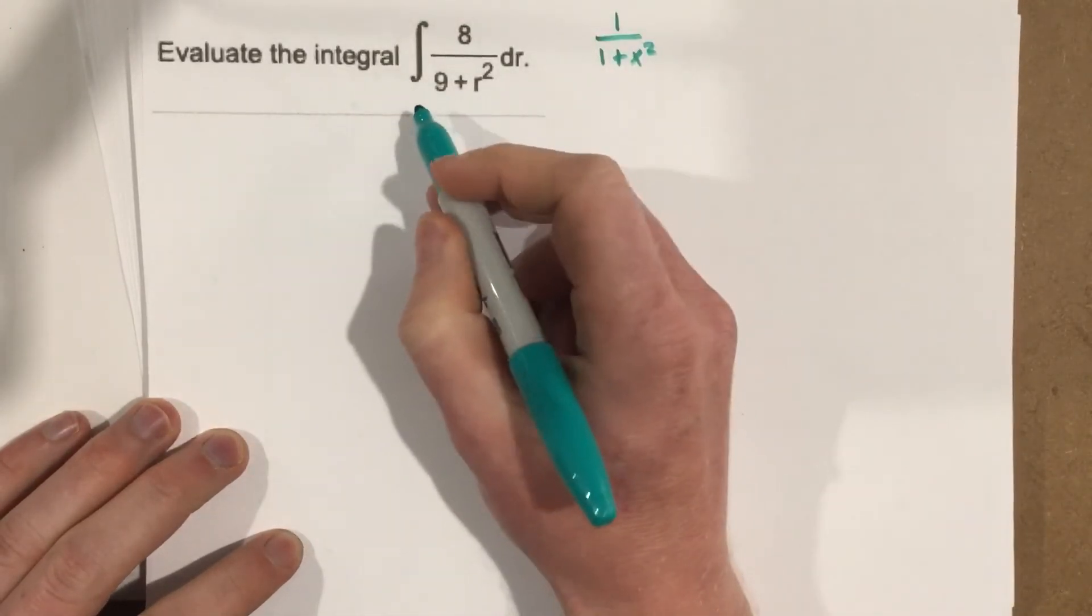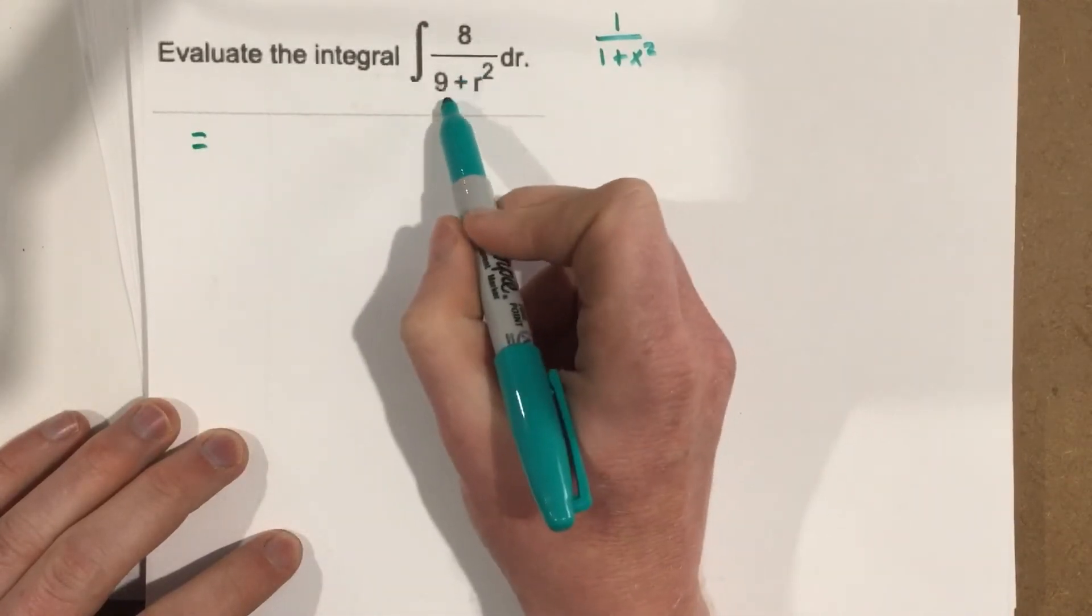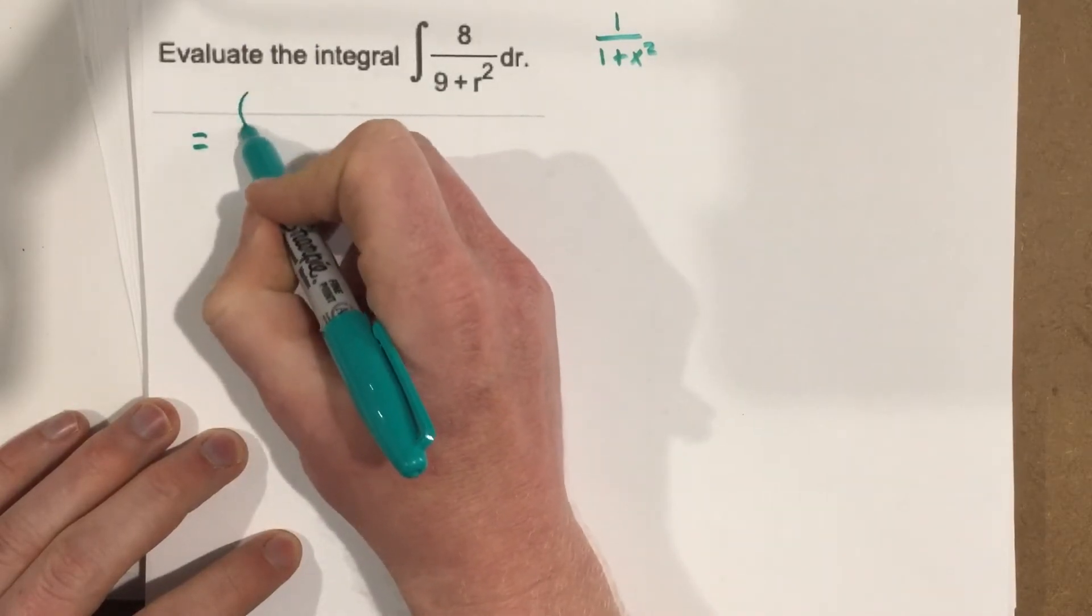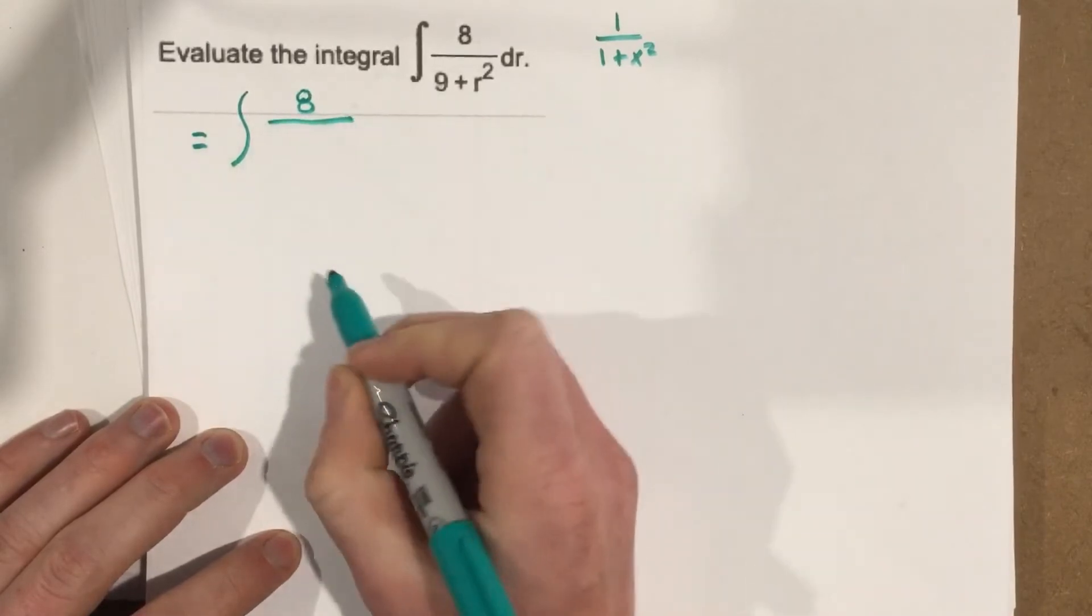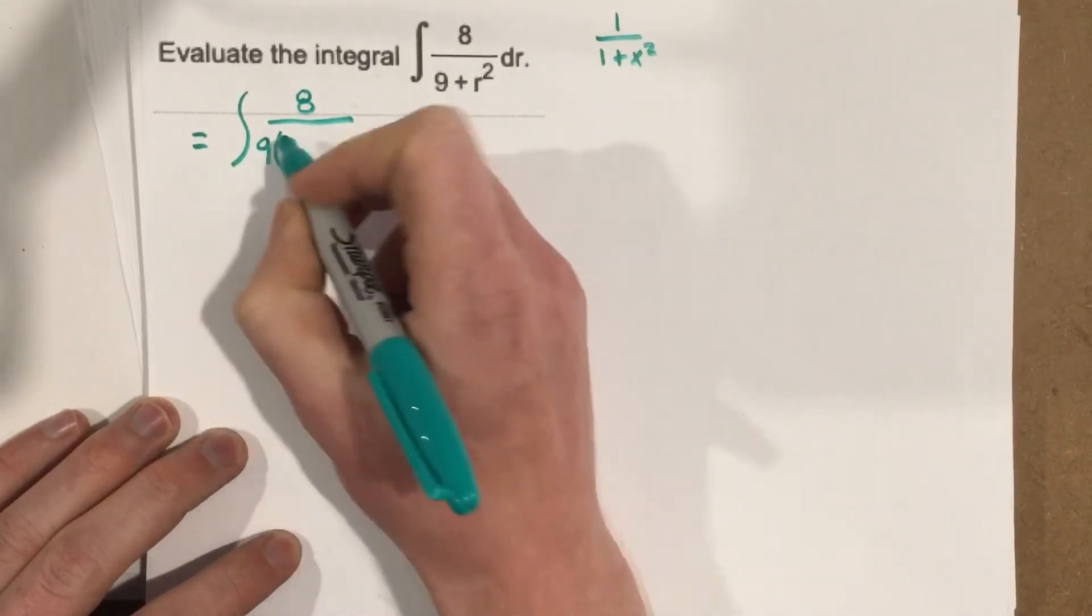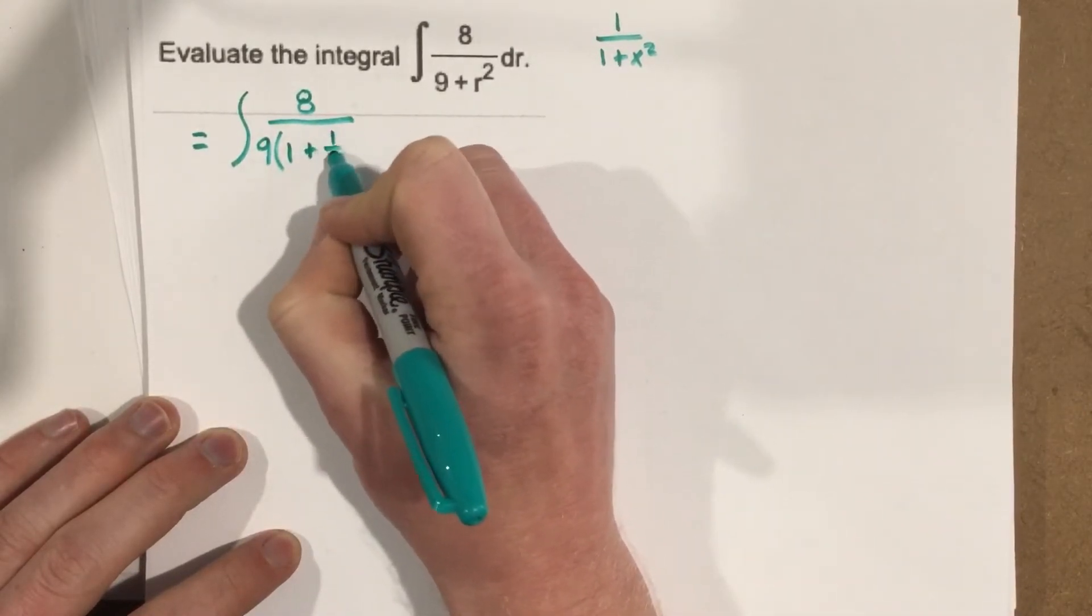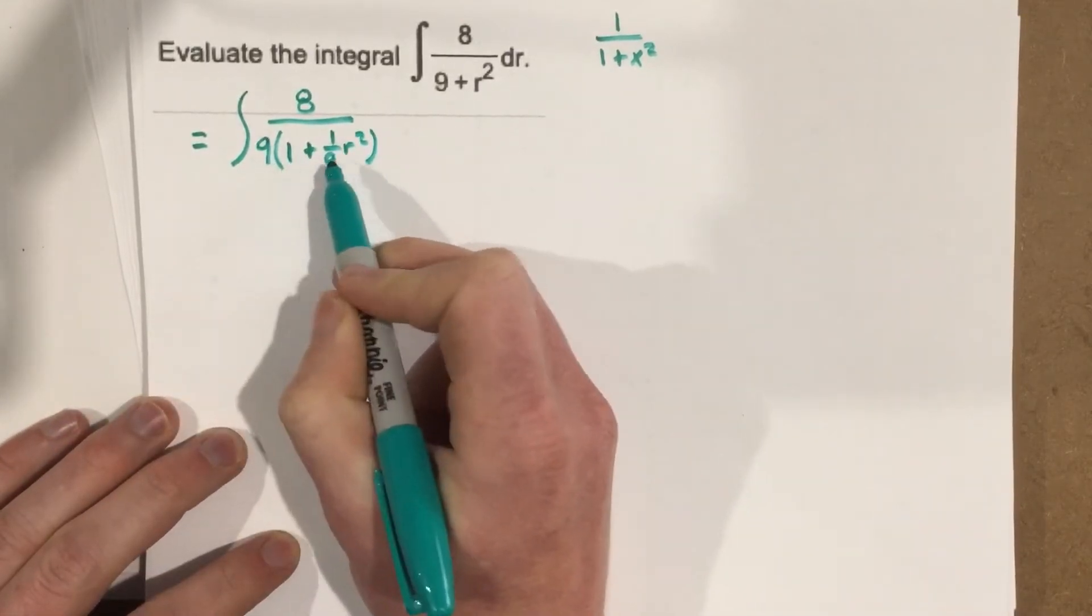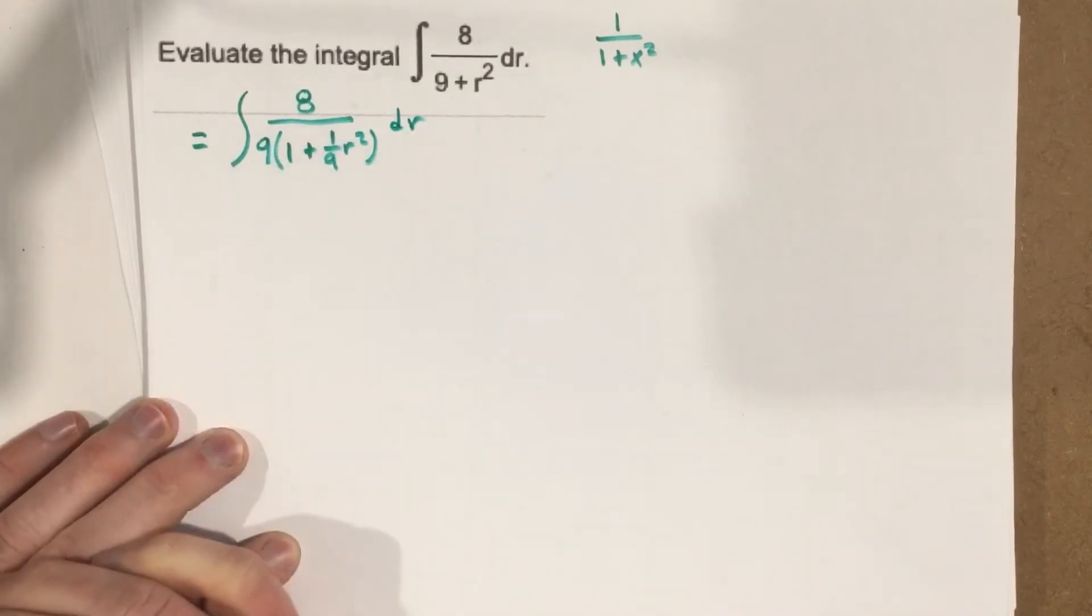So how can we do that? Well, let's rewrite this as the integral of 8 over... I'm actually going to factor out a 9 on the bottom. So 9, and that would leave me with 1 plus 1 9th r squared. If I distribute the 9 through, I end up with the same thing. So I'm still just manipulating this expression for right now.